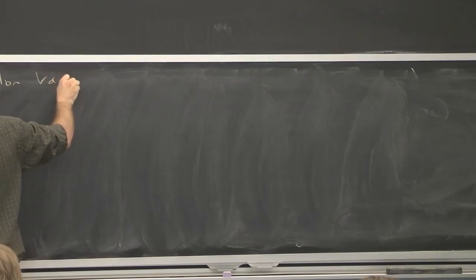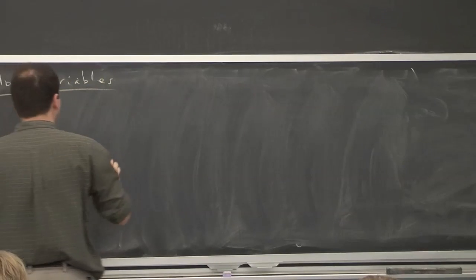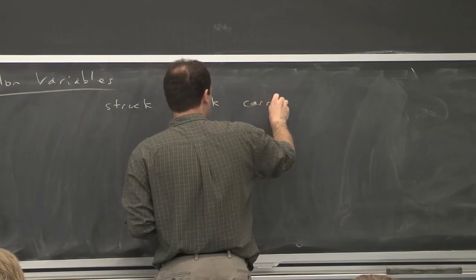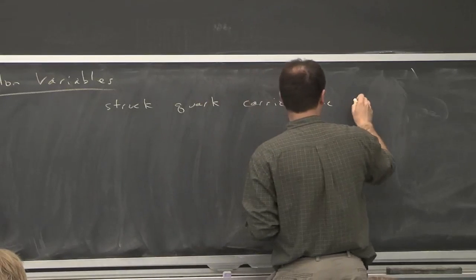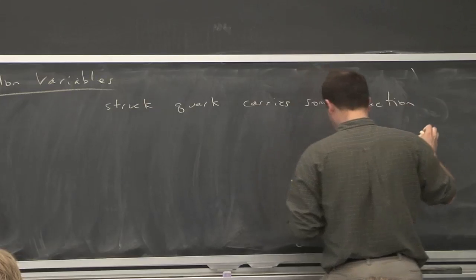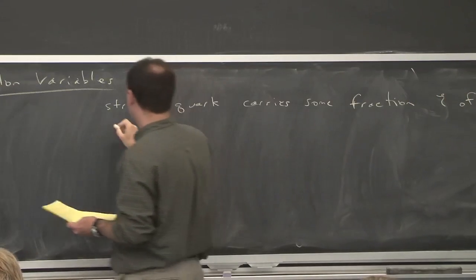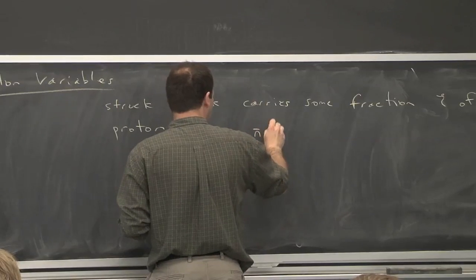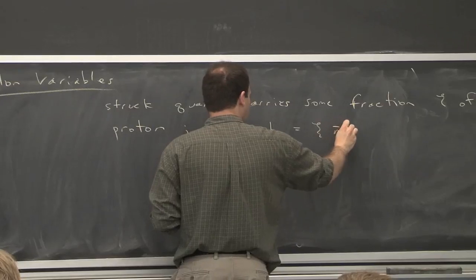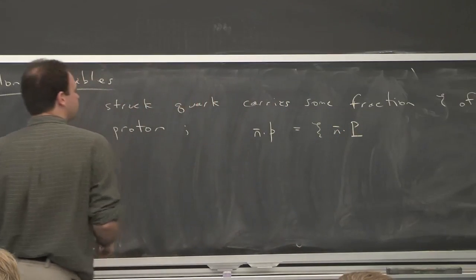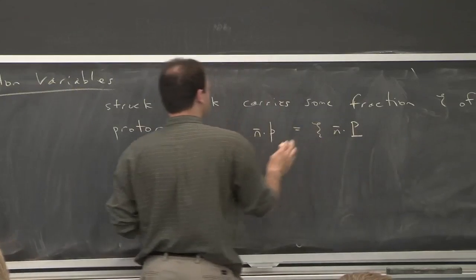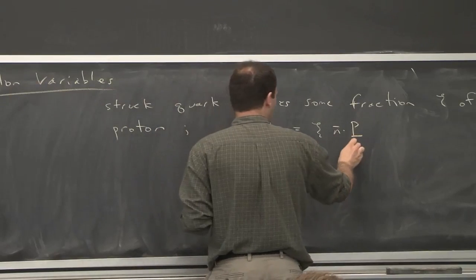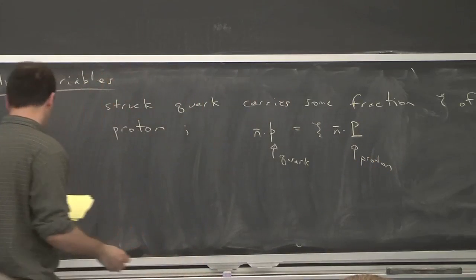So we also need some partonic variables. So the struck quark carries some momentum fraction from the proton. This is the familiar language. And for our analysis, what we're going to do is just take n bar dot little p of the quark to be something times n bar dot big P of the proton. So the fraction is this ζ variable. And it's the ratio of the quark momentum to the proton.